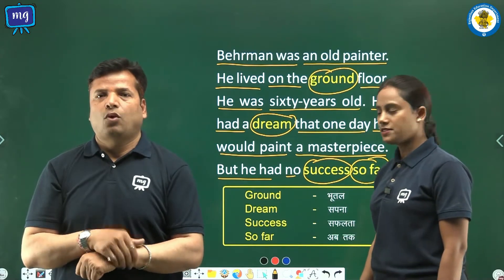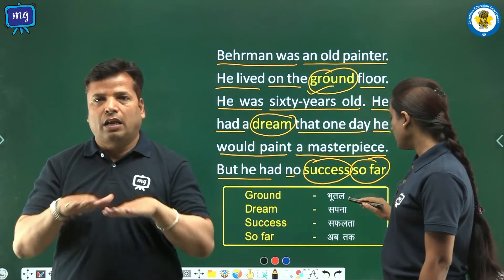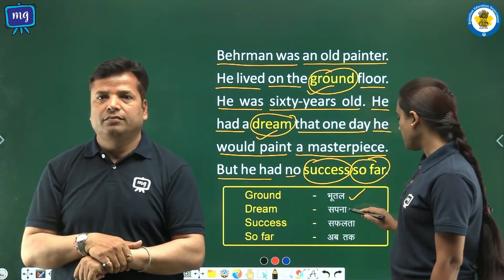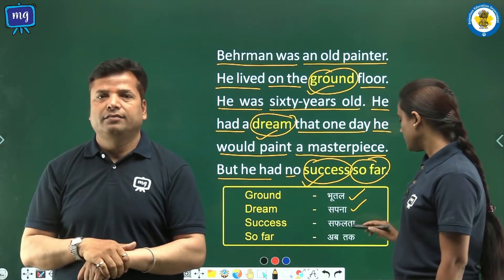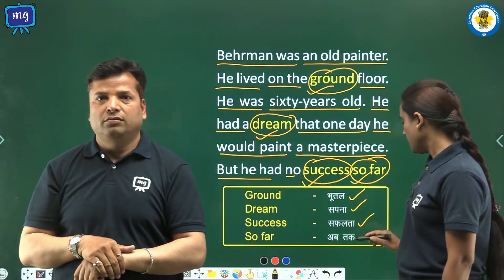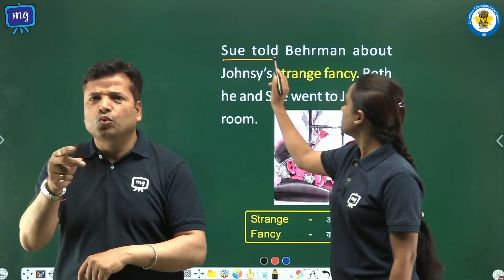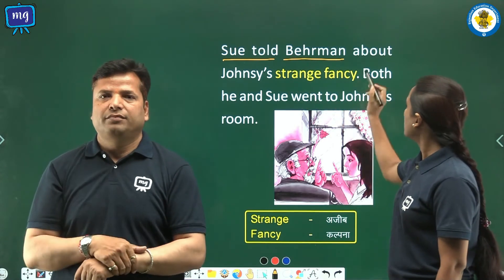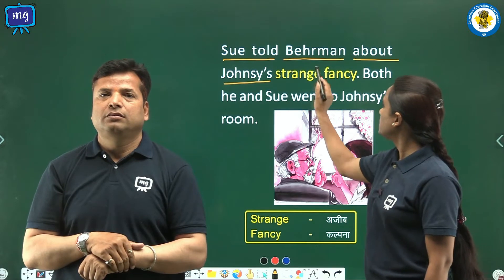Word meanings: ground — bhothal, dream — sapna, success — safalta. Sue told Behrman about Johnsy's strange fancy. Word meanings: strange — ajeeb, fancy — kalpna.